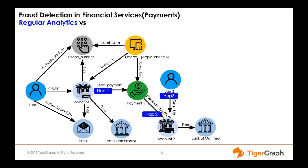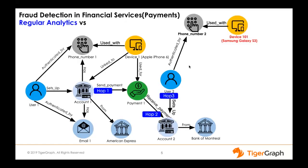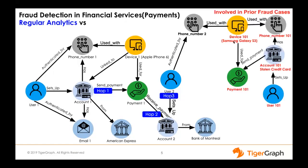When you drill down deeper — going from the user to the phone number used for two-factor authentication, to the device used with that phone number, and then looking at the prior history of that device — a graph database like TigerGraph finds that this device was used for a fraudulent transaction. Starting with the user, going to the phone number, to the device, and looking at prior payment history, in six hops with deep analytics, TigerGraph finds the culprit and stops the transaction in real time.